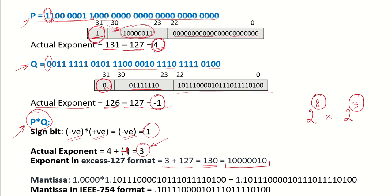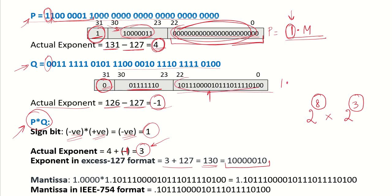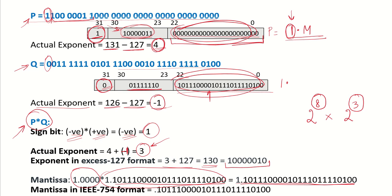For the mantissa, we must multiply the mantissas of P and Q. In IEEE 754 normalized format, the number is represented as 1.m, where the leading 1 is implicit. So the mantissa of P is 1.000000 and the mantissa of Q is 1.followed by its fractional bits (1, 1, 0, 1, 1, 1, 1...). Multiplying 1.000000 by 1.something gives us that same fractional value. When placing this in IEEE 754 format, only the fractional part is stored since the leading 1 is implied.